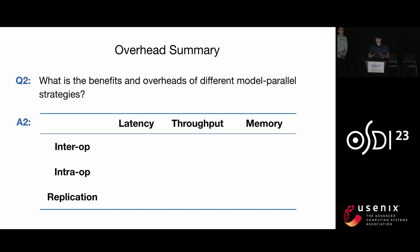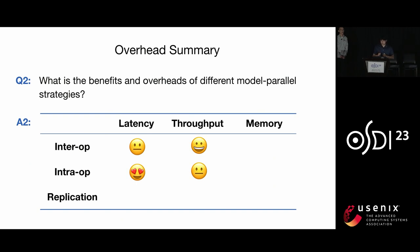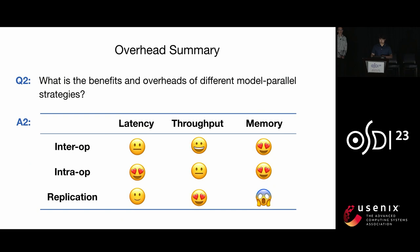For intra-operator parallelism, where we partition the individual operators of a neural network, the overhead mainly comes from heavy synchronization across multiple devices. We benchmarked the two parallel strategies and the replication baseline under three metrics — latency, throughput, and memory — as we scale the number of parallel degrees. Inter-operator parallelism slightly increases the latency of a single input but has relatively high throughput. Intra-operator parallelism reduces the latency but incurs a high throughput overhead. The replication baseline does not affect latency and has perfect linear throughput scaling, but has the highest memory usage due to model replication.